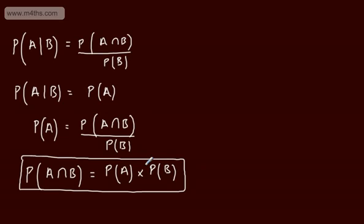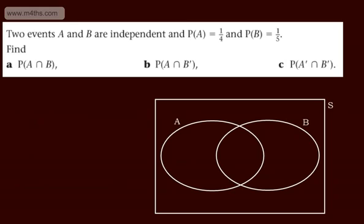In this video we're going to do a basic example and then move on with some harder stuff as we go. We're told two events A and B are independent, and the probability of A is 1 over 4 and the probability of B is 1 over 5.